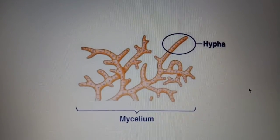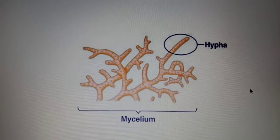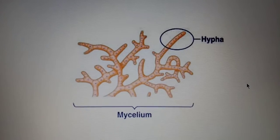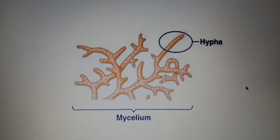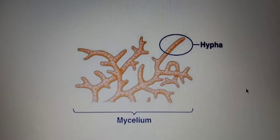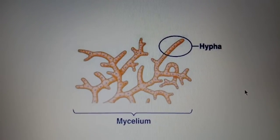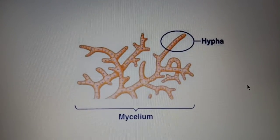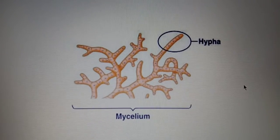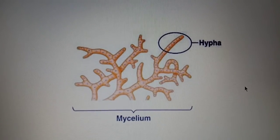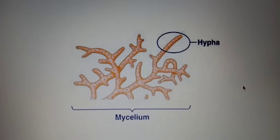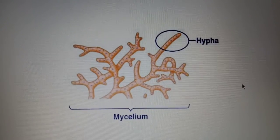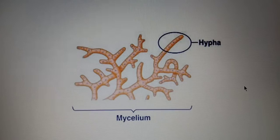So a particular filament in a fungus is called a hypha, and the network of these hyphae is termed as mycelium. Basically, a fungus is a network of thread-like structures intermingled with each other.